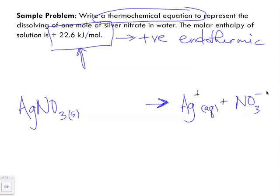However, one more part is missing. We're gonna put here plus 22.6, but not kilojoules per mole, but kilojoules. So the molar enthalpy, for one mole, right? So one mole of AgNO₃ will require...